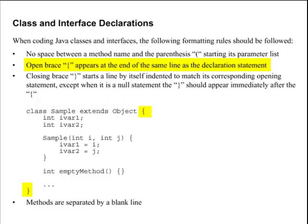Class and interface declarations. When we declare a class or an interface, we're going to follow the declaration with an open brace right at the end of the compound statement. And the closing brace for the class is going to be on a separate line by itself aligned with the beginning of the compound statement.